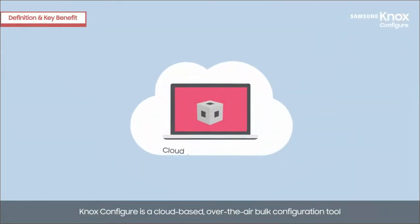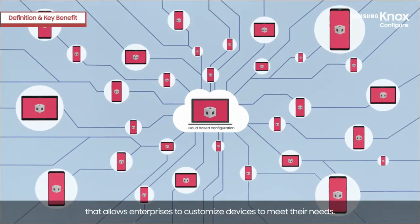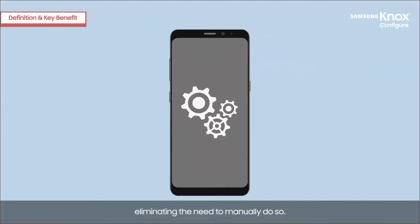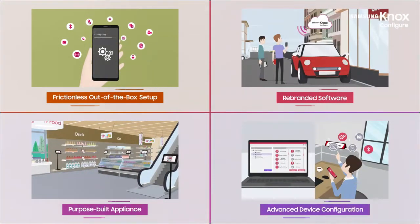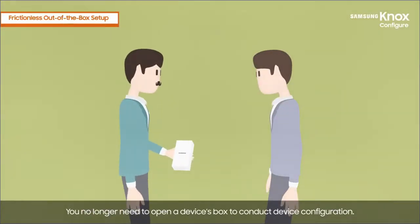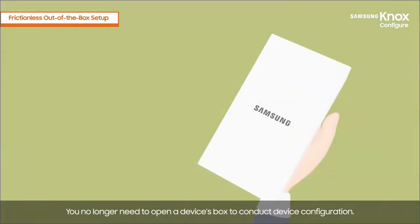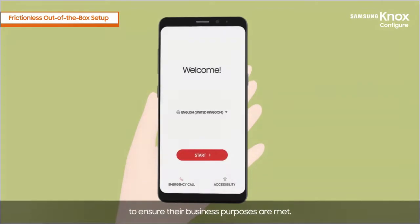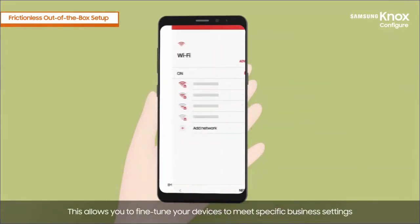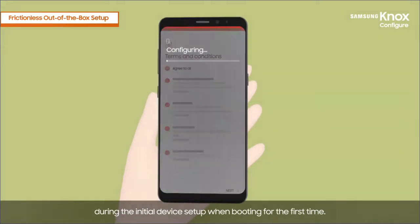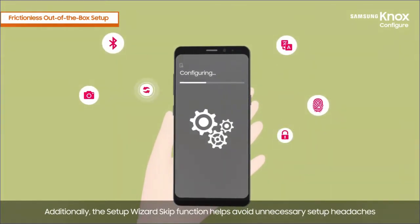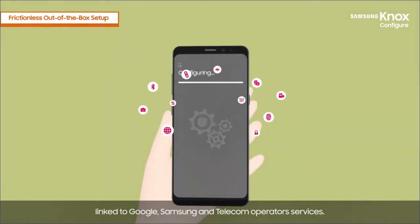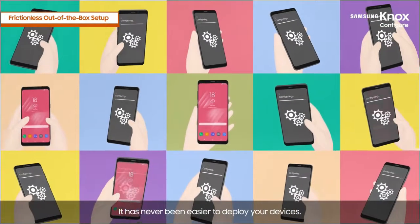Knox Configure is a cloud-based, over-the-air bulk configuration tool that allows enterprises to customize devices to meet their needs. With Knox Configure, you can automate the configuration of mobile devices, eliminating the need to manually do so. You no longer need to open a device's box to conduct device configuration. IT admins can configure mobile devices in advance to ensure their business purposes are met, fine-tuning devices to meet specific business settings during the initial device setup when booting for the first time. Additionally, the Setup Wizard Skip function helps avoid unnecessary setup headaches for a more simplified setup, allowing you to skip setting up information linked to Google, Samsung, and telecom operator services. It has never been easier to deploy your devices.